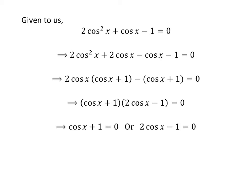The above expression gives either cosine of x plus 1 is equal to 0, or 2 times cosine of x minus 1 is equal to 0.